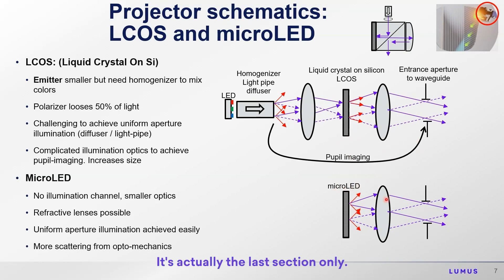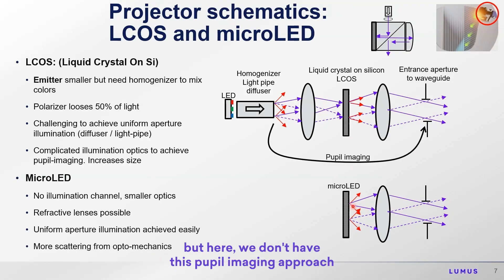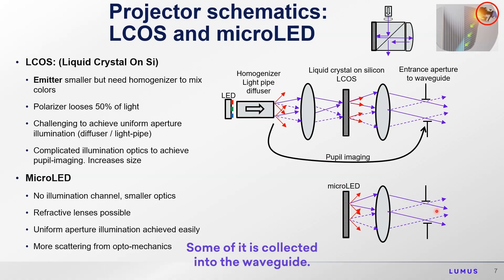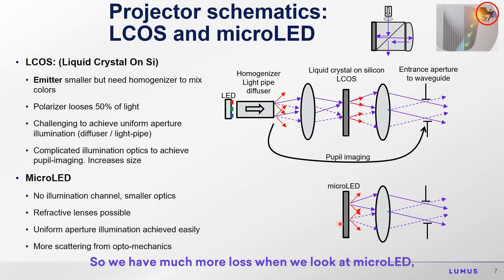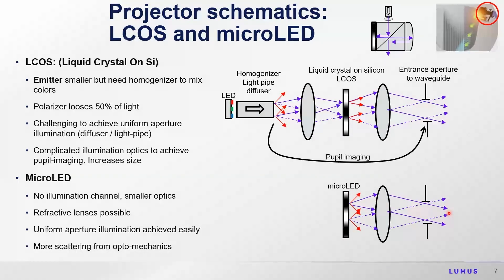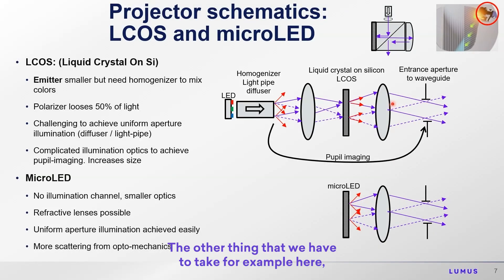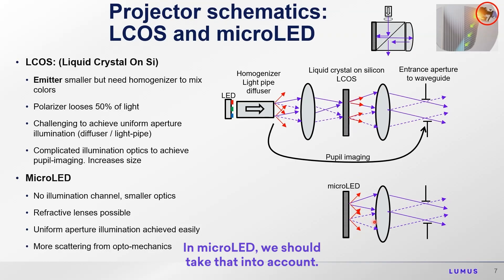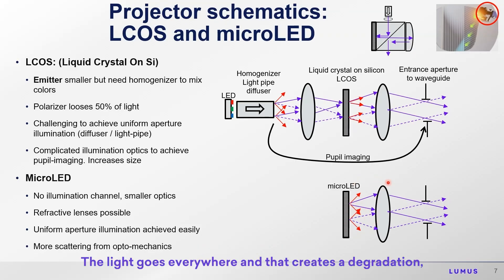Now let's look at micro LED for comparison — it's actually only the last section. You have light coming from the micro LED, then collimated into the waveguide. But here we don't have this pupil imaging approach; it's just a scattered Lambertian or any other distribution, and only some of it is collected into the waveguide. So we have much more loss when coupling a micro LED into a waveguide. Also, since the light goes everywhere, that creates a degradation in contrast.